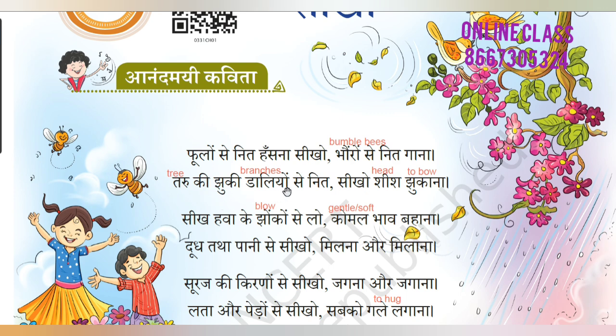Taru ki juki daliyon se nit sikho shish jukana. Taru is tree — you would have learnt vriksha, pheid — everything goes for tree, and taru is also tree. Daliyon is branches. You would have noticed how the branches will be bowing down. From that, our head should always be bowed — shish jukana. The poet means that we should always be polite and have that politeness in us.